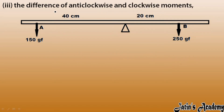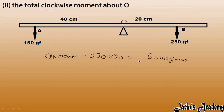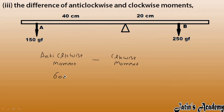Now we find the difference between the clockwise and anti-clockwise moments. Anti-clockwise moment minus clockwise moment equals 6000 minus 5000, which gives us 1000 gram force centimeter. This is actually the resultant, because the clockwise moment is always taken as negative. So the difference in the clockwise and anti-clockwise moments is 1000 gram force centimeter.